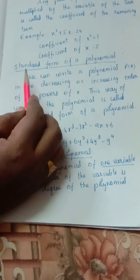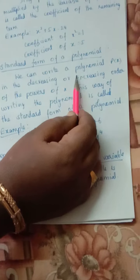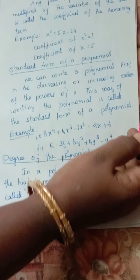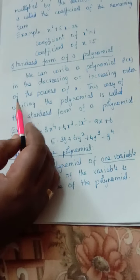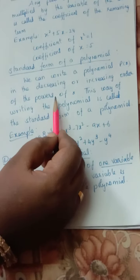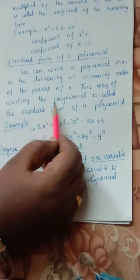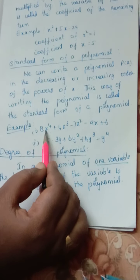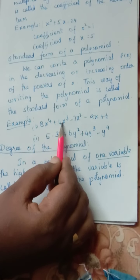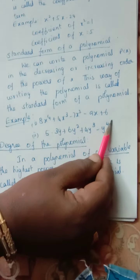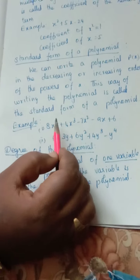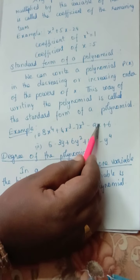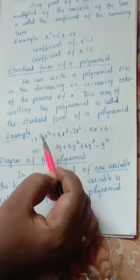Next, standard form of a polynomial. We can write a polynomial as p(x) — in general we use p(x), or q(x), whatever it is — written in the decreasing or increasing order of the powers of x. This way of writing is called the standard form of a polynomial. Here the variable is x: x⁴, x³, x², x, and constant. Among these, x⁴ is the highest power, so 4 is the highest power. We can write in decreasing or increasing order.